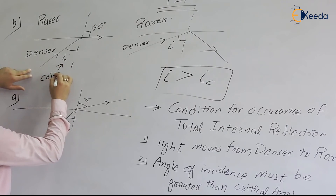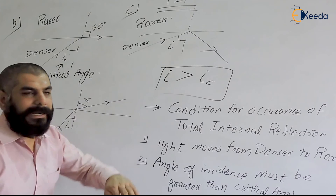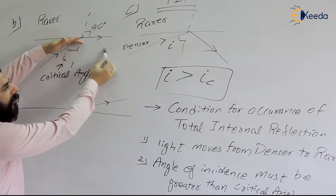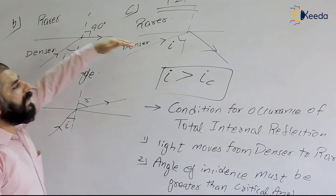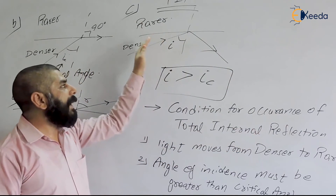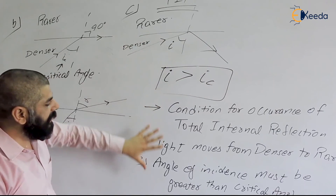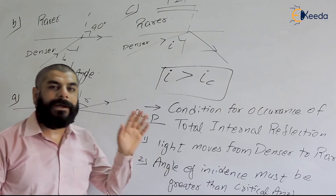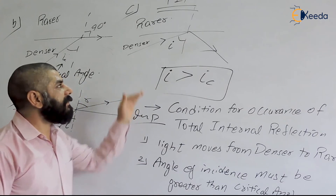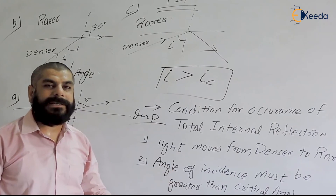We also derived the formula for the critical angle. For total internal reflection, if the angle of incidence increases further beyond the critical angle, the light reflects back into the same medium — this is total internal reflection. These two conditions are important for optical fibers: the core must be denser (higher refractive index), and the angle of incidence must be greater than the critical angle. In the next class, we'll discuss optical fibers.